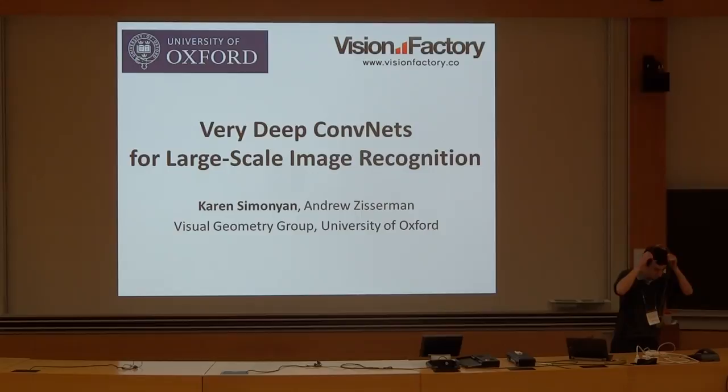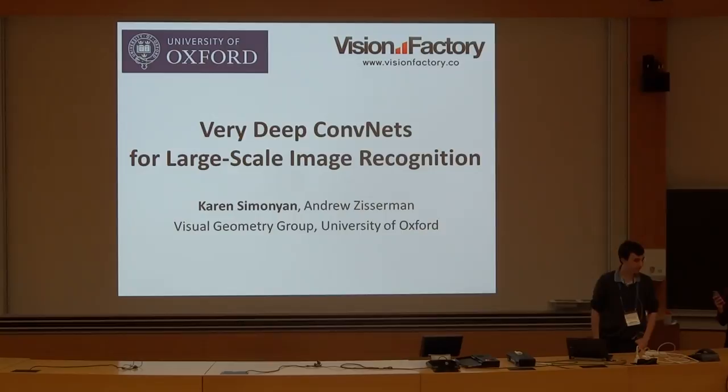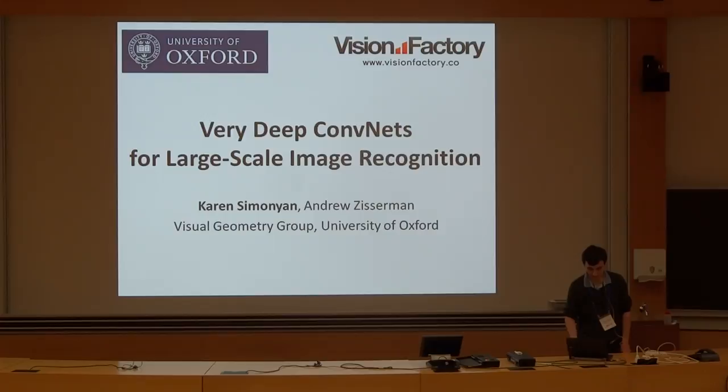Next up we have the VGG team, the Visual Geometry Group of the University of Oxford. They are the winners of the classification and localization with pretraining track, and runner-up of image classification with pretraining. The talk will be given by Karen Simonyan. Thanks for the introduction. I'll talk about the VGG team's submission to the classification and localization challenges.